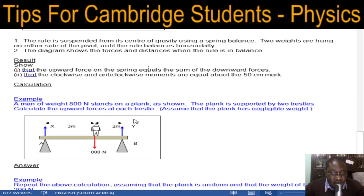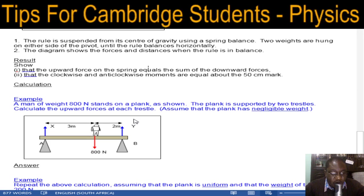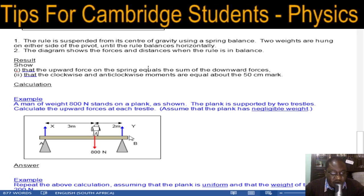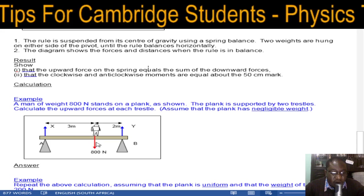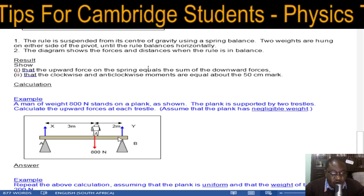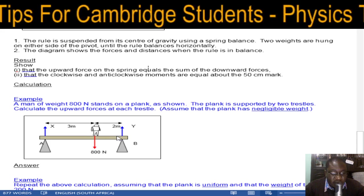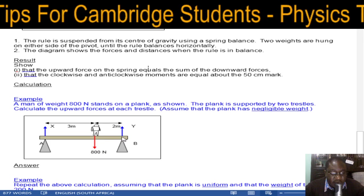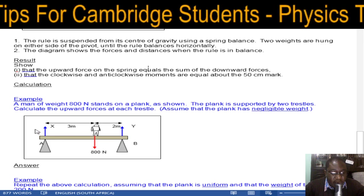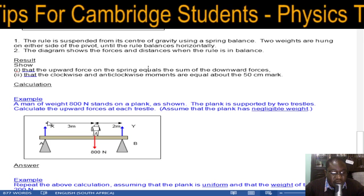If you go back to the first example on moments, you'll understand. The anticlockwise moment will be 800 times the two meters, which is 1600 newton meters. Please write it down so that you understand.